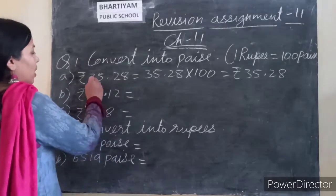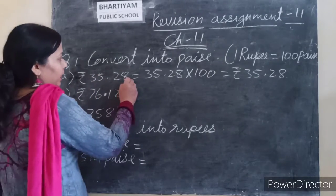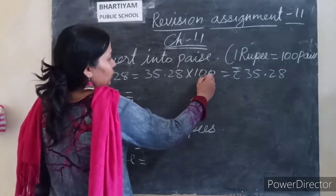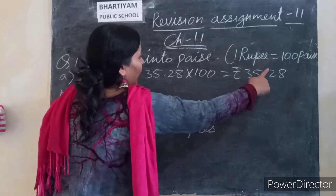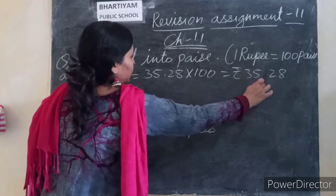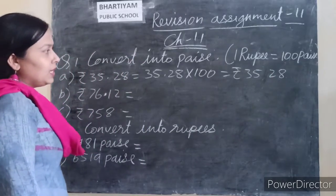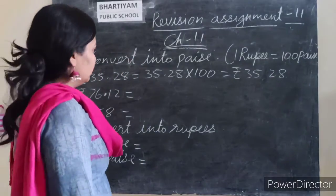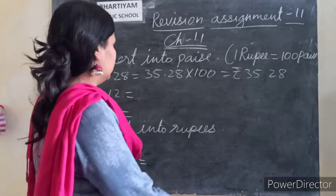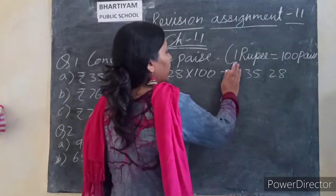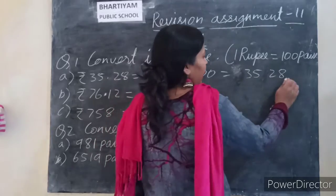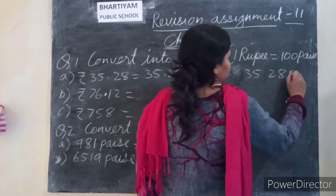Now we will multiply by 100. If we multiply by 100, then the decimal point will move. The answer is 3528 paise.